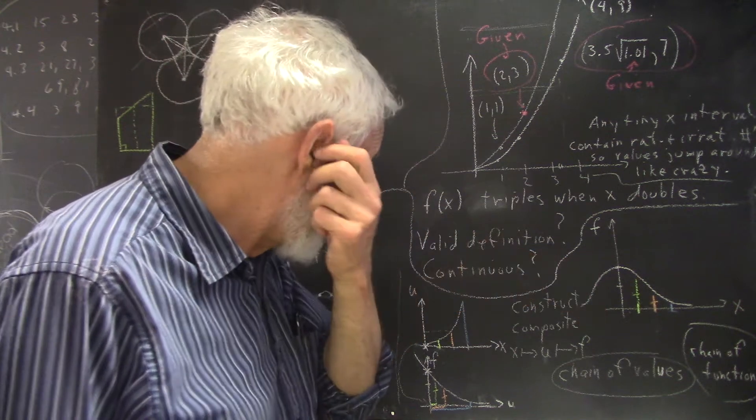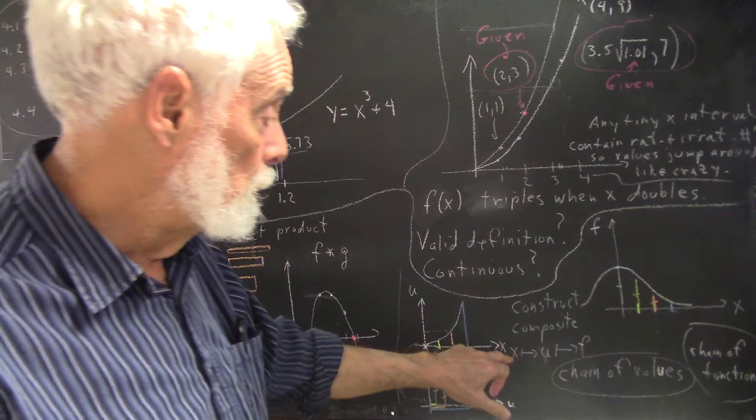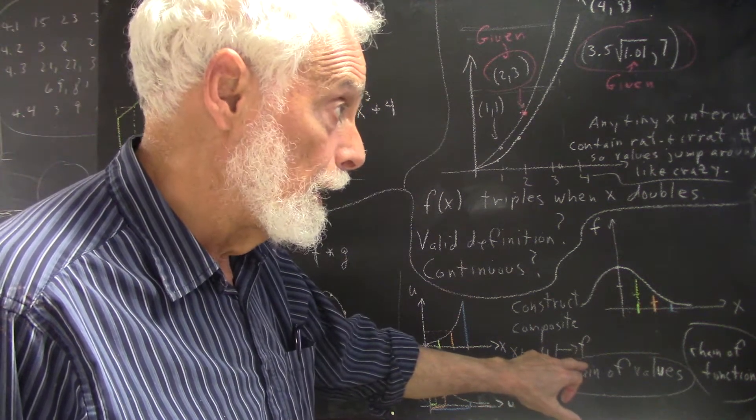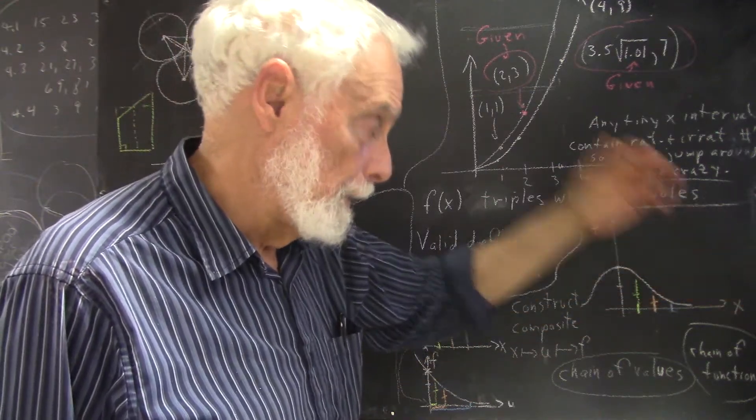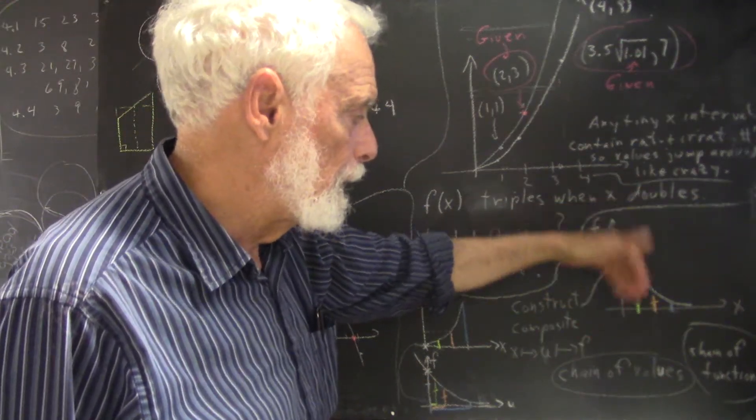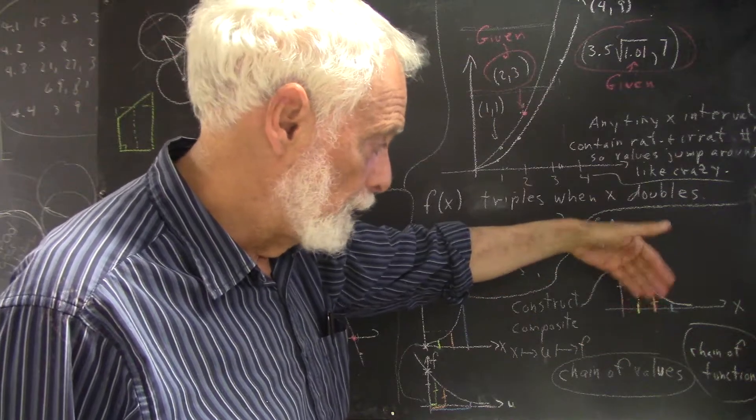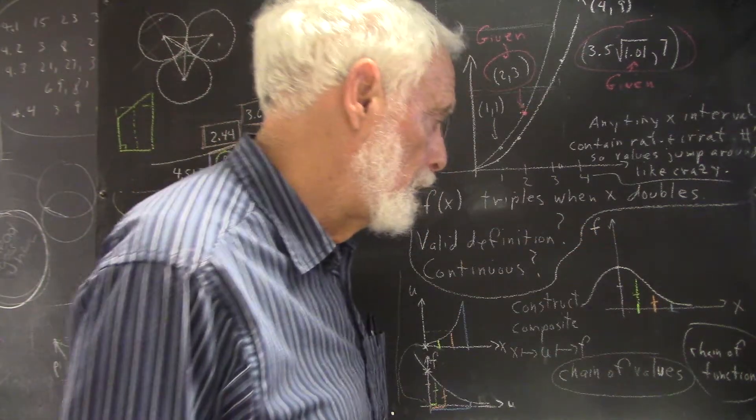And then we could take that value of U and calculate a value that we call F according to a different rule. We can apply one rule to X, and then another rule to the result of that. We've got a chain of values, and we could continue that chain. We could take the values of this thing and calculate with a different rule some other value, and so on and so on.